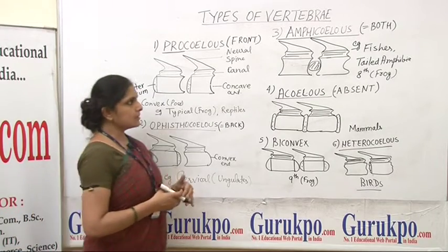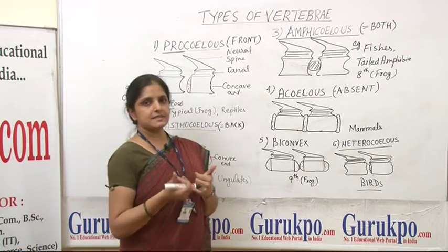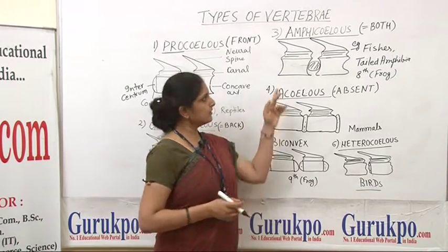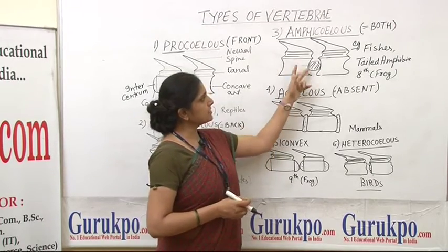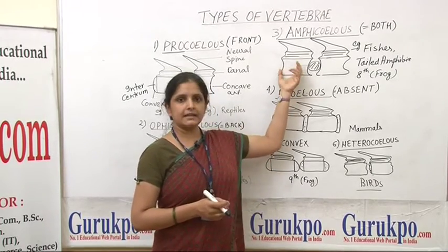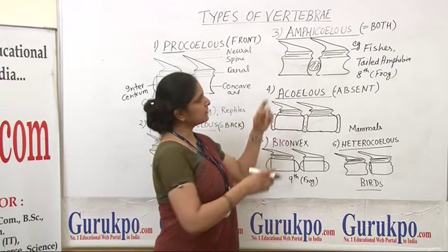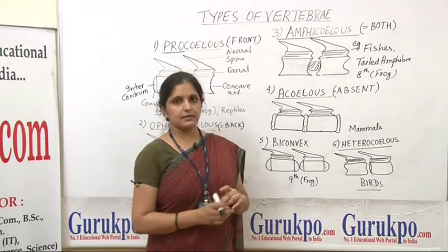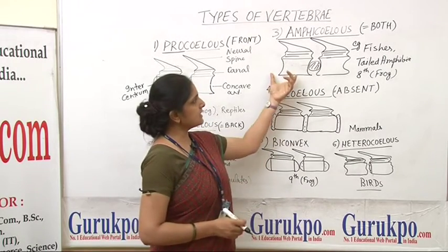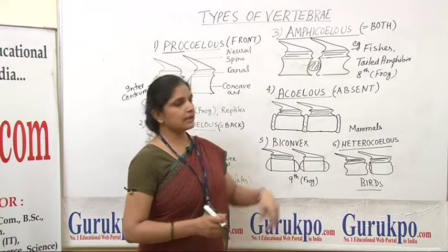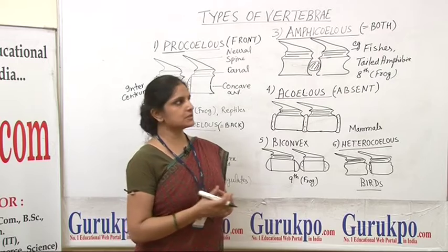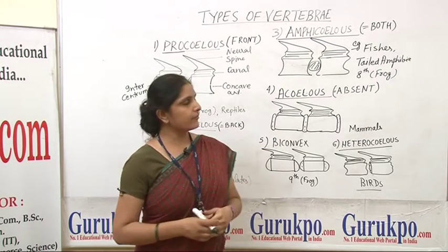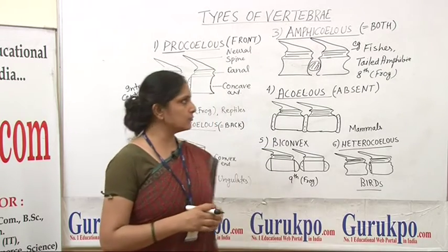The third type is called amphicoelous, where 'amphi' means both. Both ends — the anterior and posterior — have a concave shape, with a cavity at both the anterior and posterior ends of the centrum.